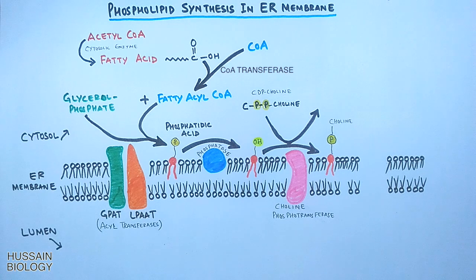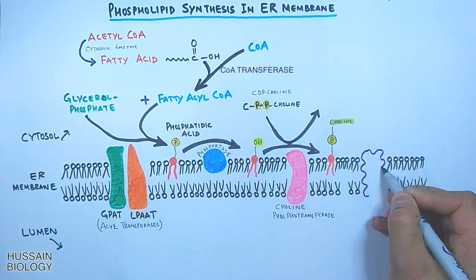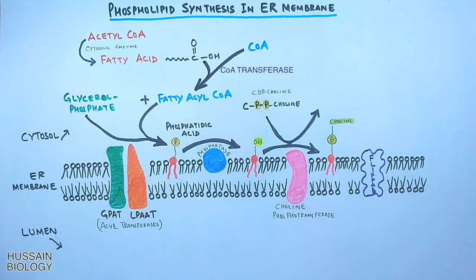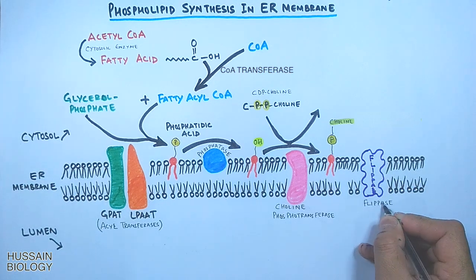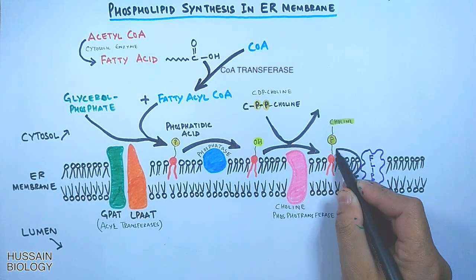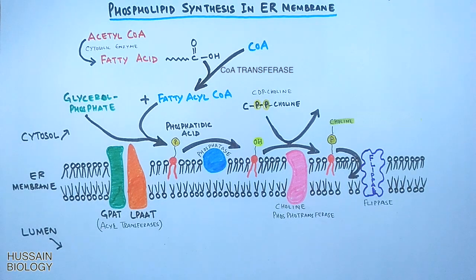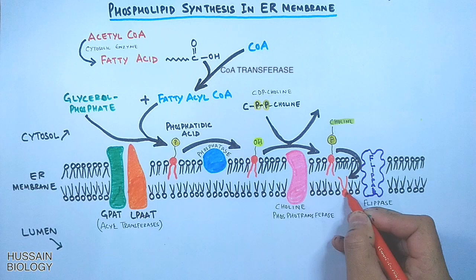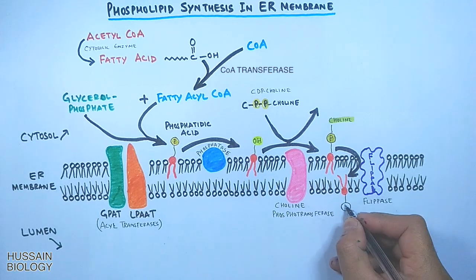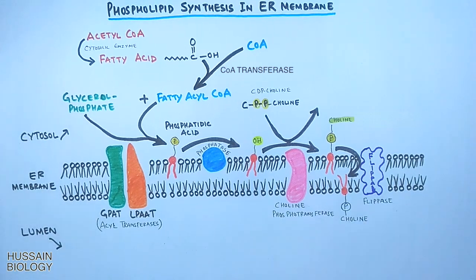From here we need to flip this phospholipid from the cytoplasmic leaflet to the exoplasmic leaflet. To do so, the flippase enzyme present in the endoplasmic reticulum membrane flips the phospholipid to the exoplasmic side of the ER membrane, as shown in the diagram.